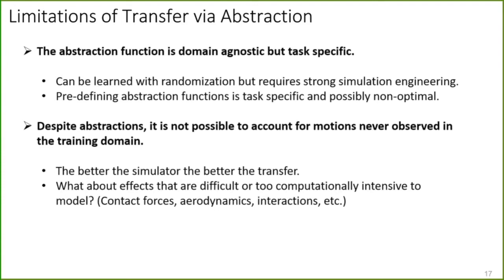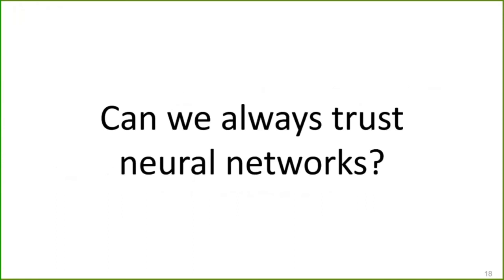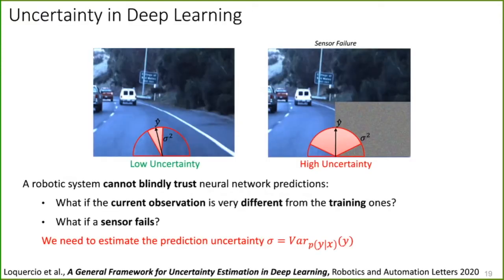I'd like to pose a controversial question: can we always trust neural networks, particularly in robotics? I think the answer is no. A safety critical system like a drone cannot blindly trust neural networks because current observations might be different from training ones, or sensors might fail. So it seems we need a notion of uncertainty to at least detect such failures.